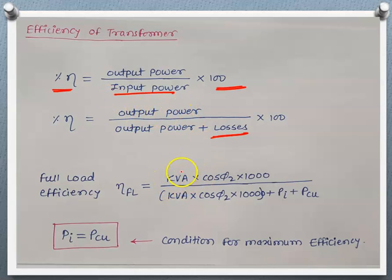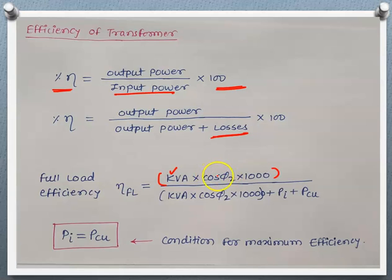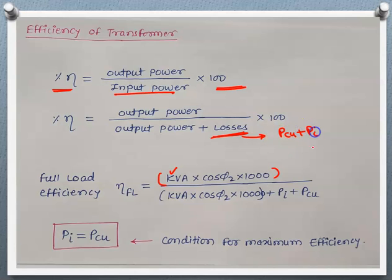Output power equals KVA × cos(φ₂) × 1000 — the 1000 factor is because rating is in KVA. This is the output power. The losses are copper losses plus iron losses: P_I + P_CU. So the full load efficiency expression is: [KVA × cos(φ₂) × 1000] divided by [KVA × cos(φ₂) × 1000 + P_I + P_CU].